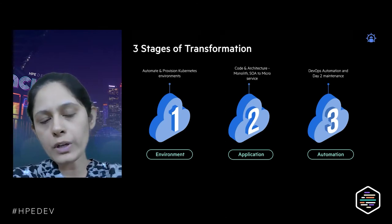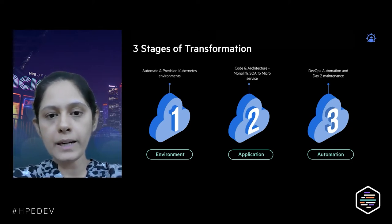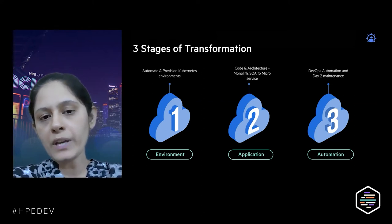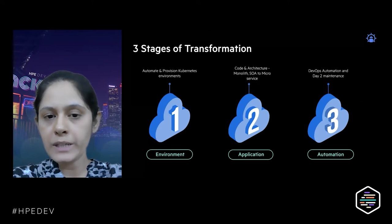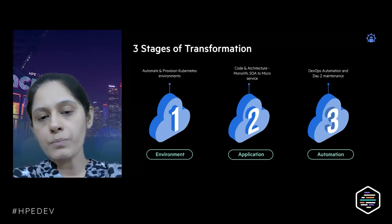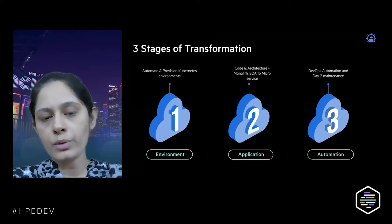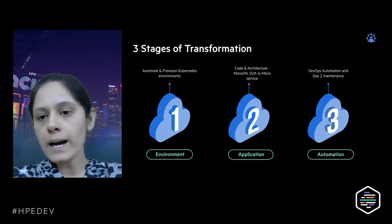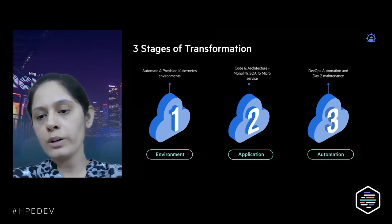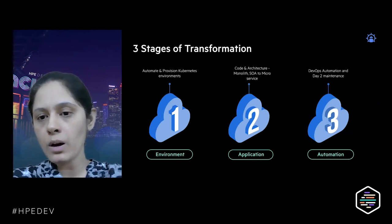The second phase involves the application itself, starting with transforming the architecture from a monolithic architecture to a microservice-based architecture. In some cases monoliths are optimal, but in most cases microservices are beneficial and take full advantage of Kubernetes environments. Today's goal is to discuss microservices and what considerations we need to make when transforming a microservice into a Kubernetes-based deployment. The last stage is day-2 maintenance — how we put automation around it, like CI/CD, monitoring, and logging.